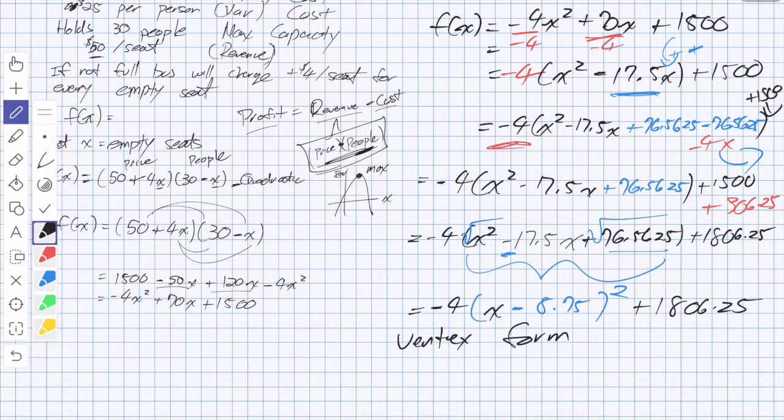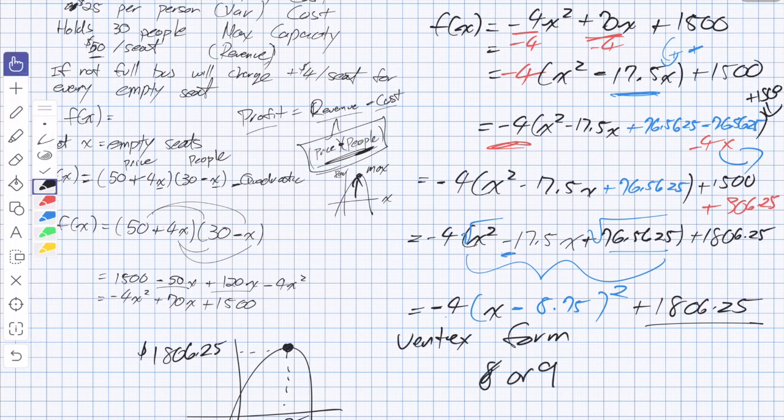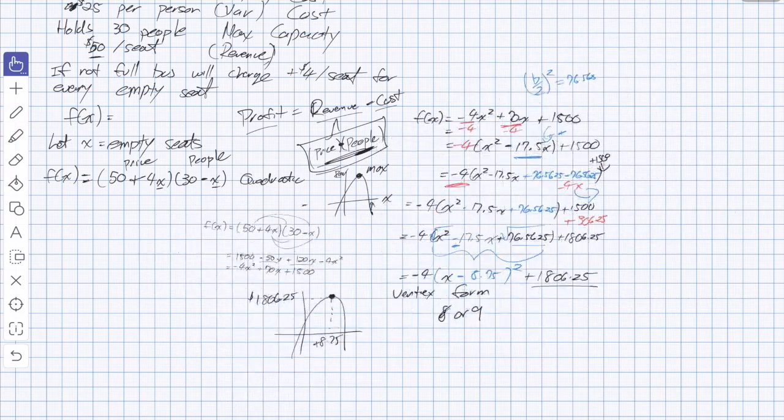How is this helpful? Vertex form is really nice because the vertex is where there's a max or a min. So this is a negative quadratic, so it definitely goes up and down. It's telling us that the max amount of money you'd make is $1,806.25, and that's when you would have positive 8.75 tickets, or empty seats. Now we've got a problem. You can't have 0.75 empty seats. We can either have 8 empty seats or 9 empty seats.